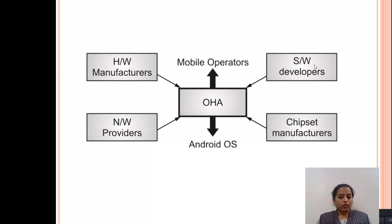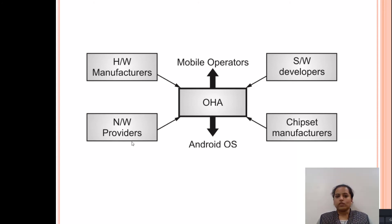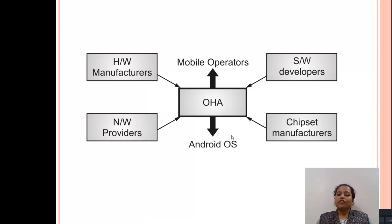The most important ones are the software developers, because they are the ones who use Android to develop applications that run on mobile devices manufactured by the hardware manufacturers, which use chipsets provided by the chipset manufacturers, and which make use of network providers for delivering the application to the customers. Together, these major components define the Open Handset Alliance. Using this alliance, mobile operators follow the standards for delivering apps to customers, and the Android operating system makes use of those standards for optimizing the OS and delivering applications.